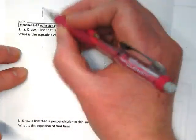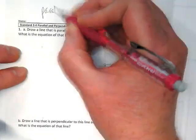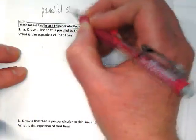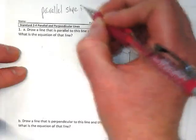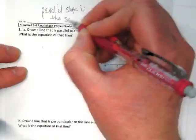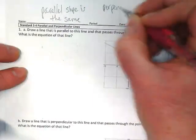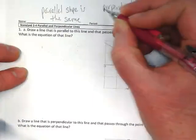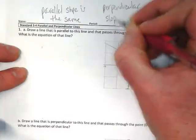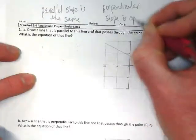What we know about parallel lines is that their slope is the same. What we know about perpendicular lines is that the slope is the opposite reciprocal.